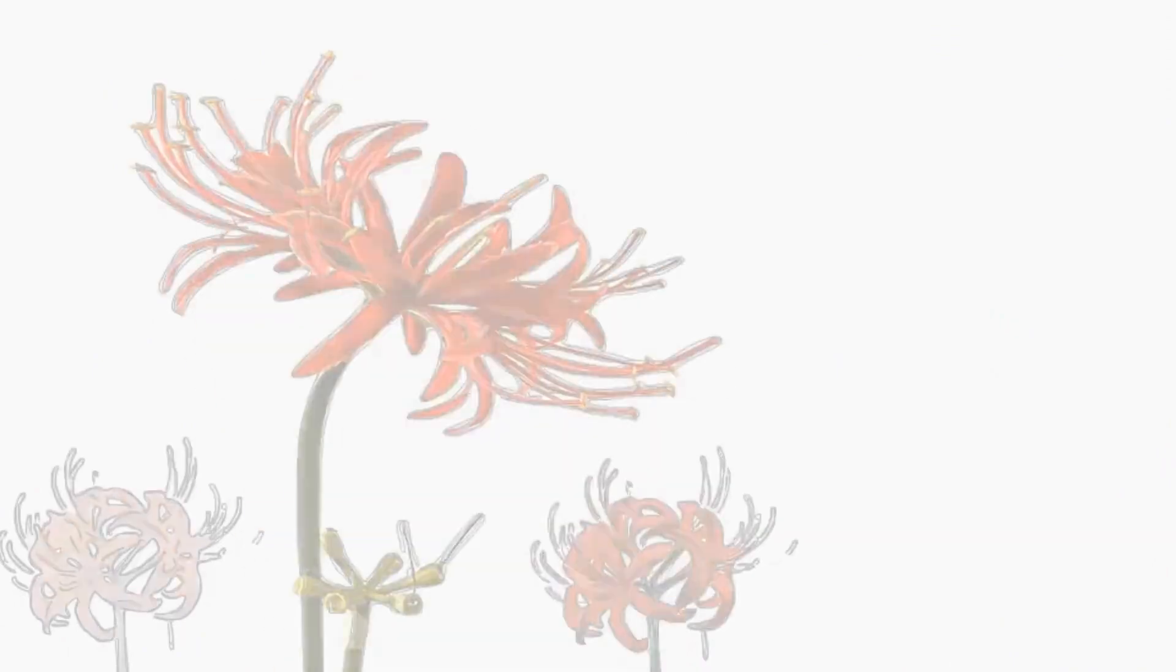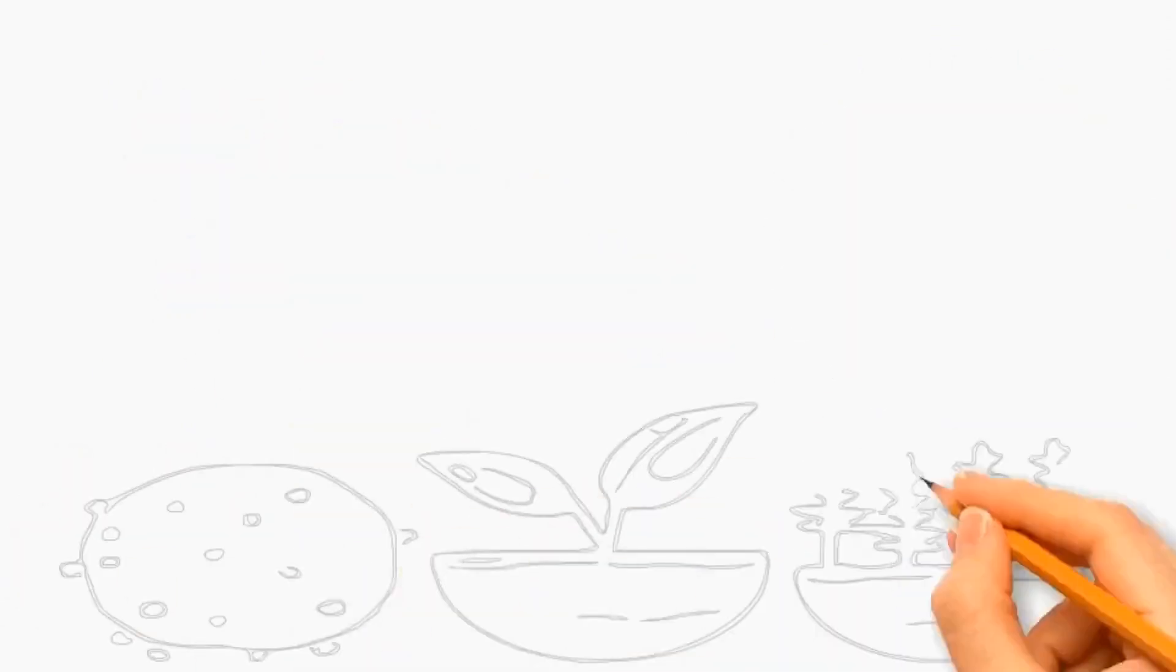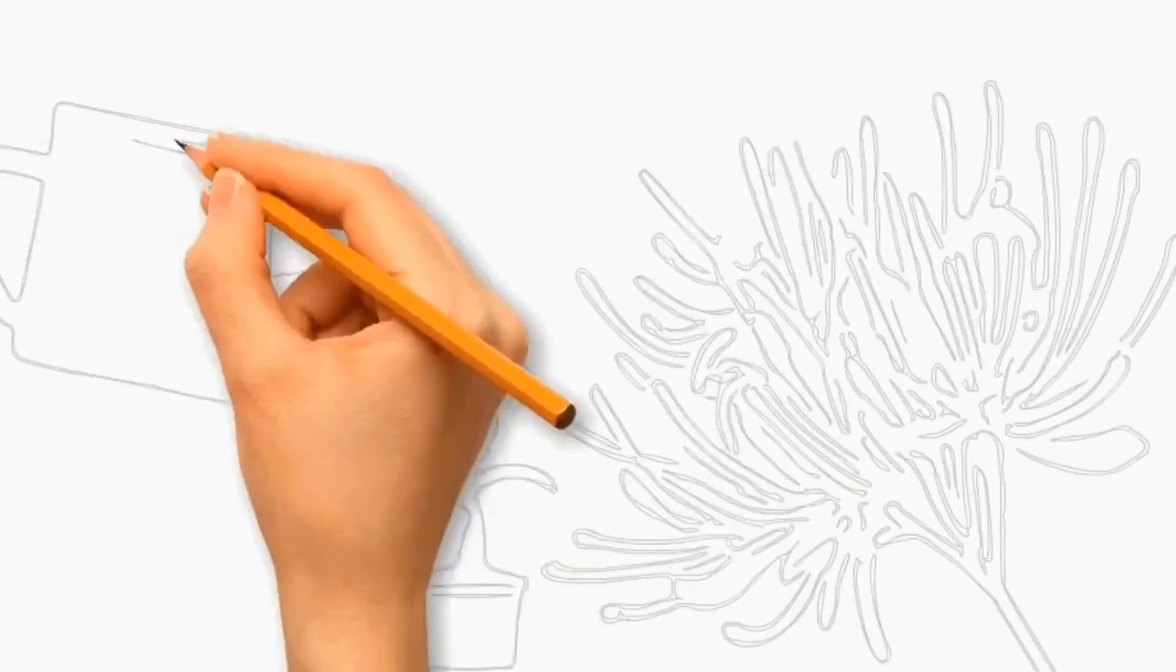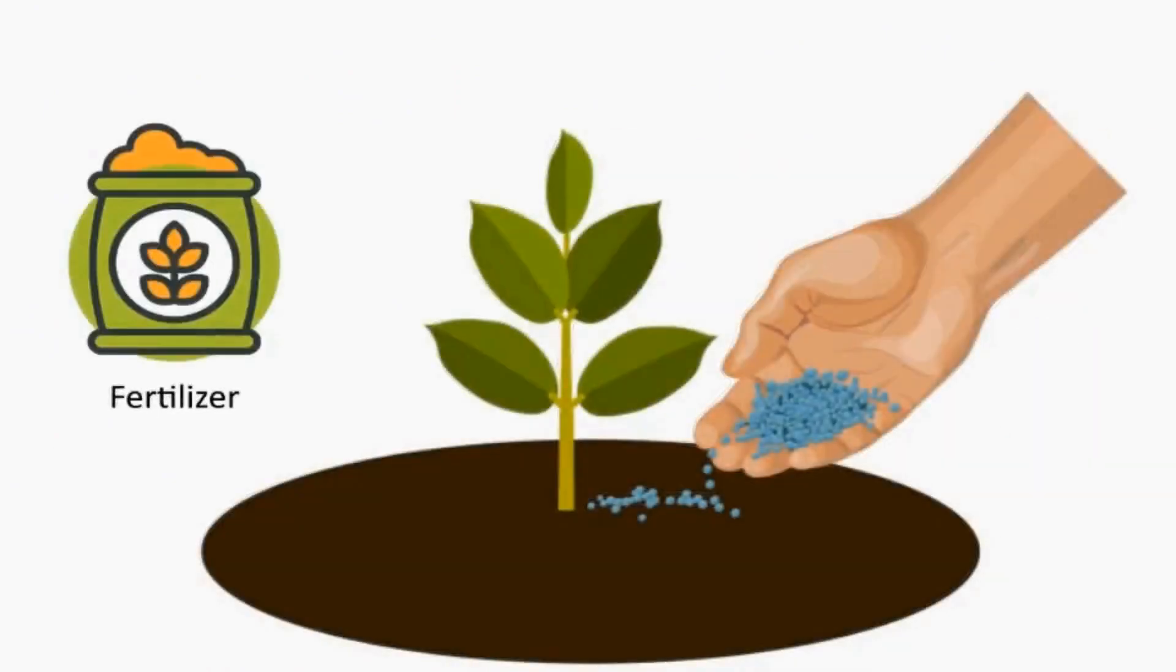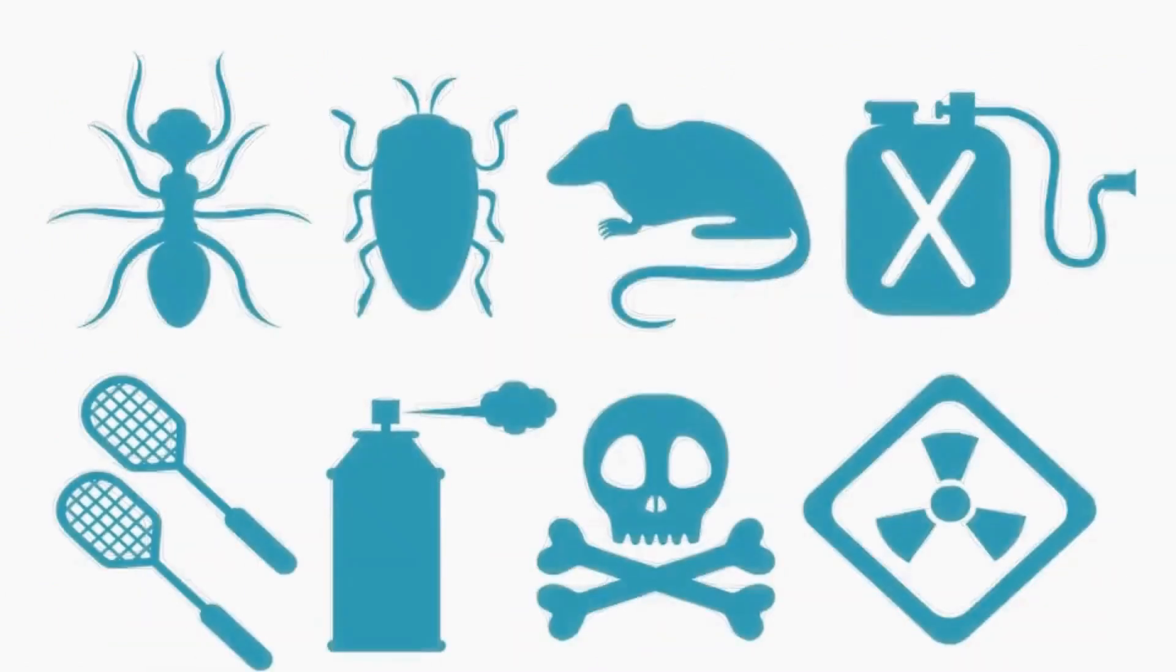Red Spider Lilies prefer full sun to partial shade for at least 6 hours each day. They prefer slightly acidic to neutral soil with good fertility. They prefer moderate watering for proper growth. Apply a balanced, slow-release fertilizer into the soil. They are resistant to pests and diseases. Take appropriate measures such as organic pest control methods if necessary.